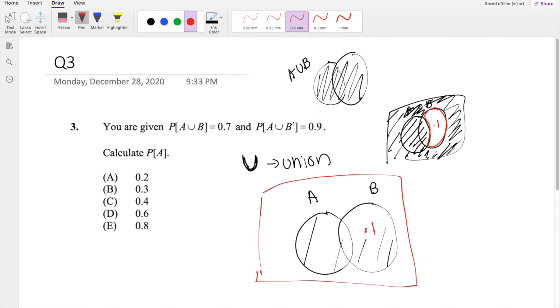If we know this right here is 0.1, and they give you that A and B, this whole thing right here, is 0.7, then we know that just probability of A, which is our blue circle right here, is just 0.7 minus 0.1, which is 0.6, which is our answer, D.